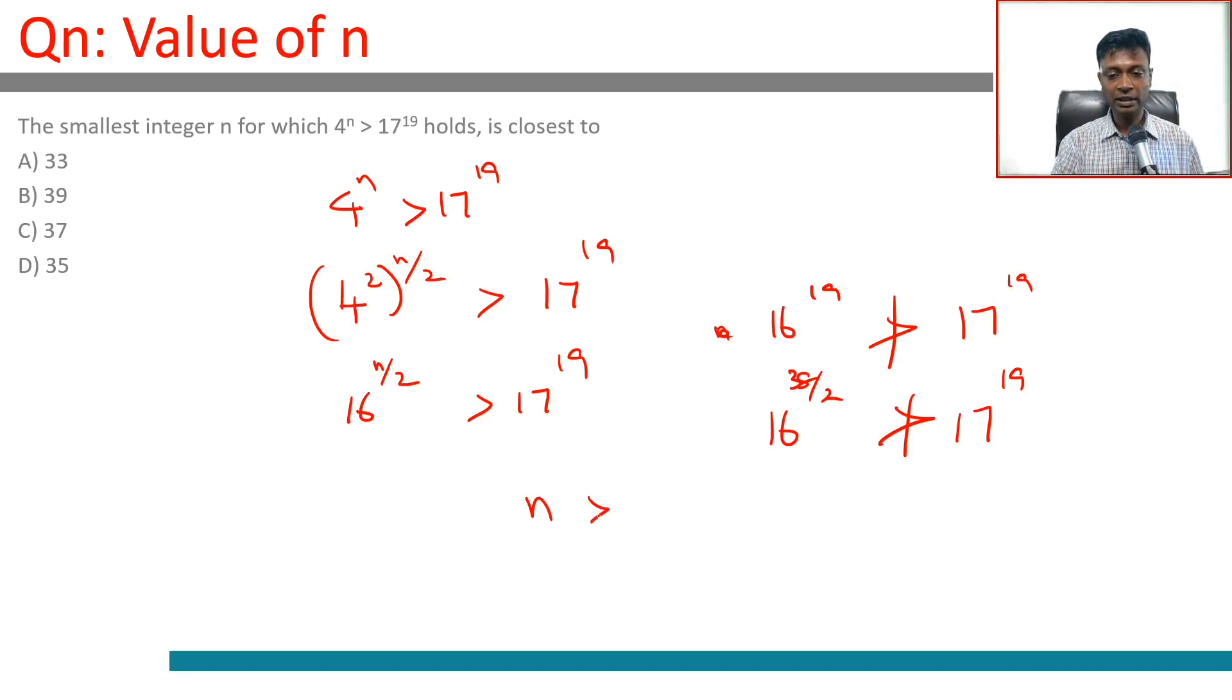n has to be greater than 38. 33 doesn't work, 37 doesn't work, 35 doesn't work. We got this.